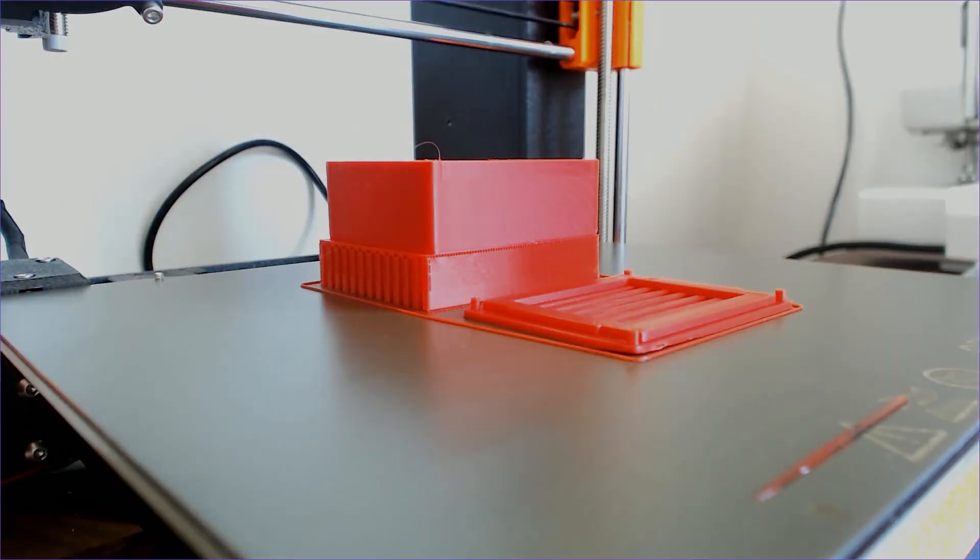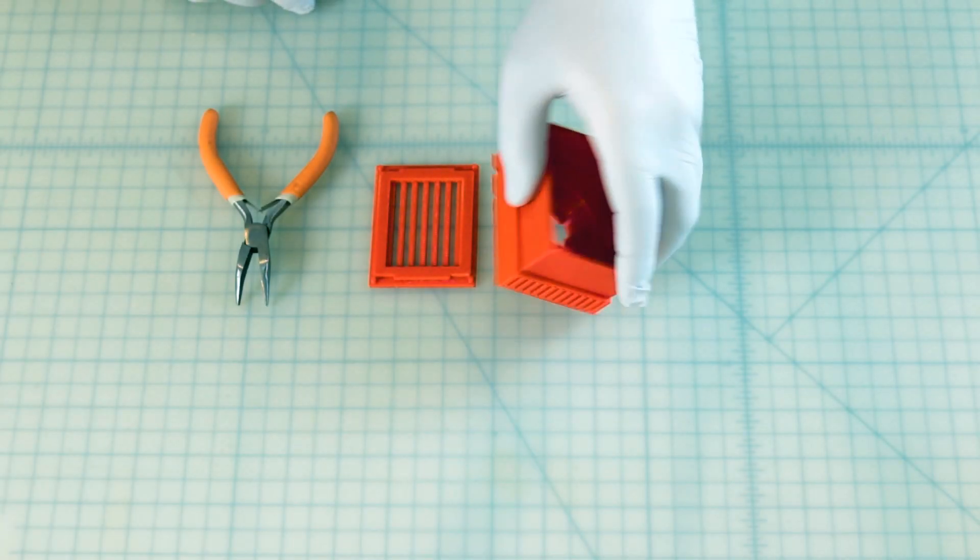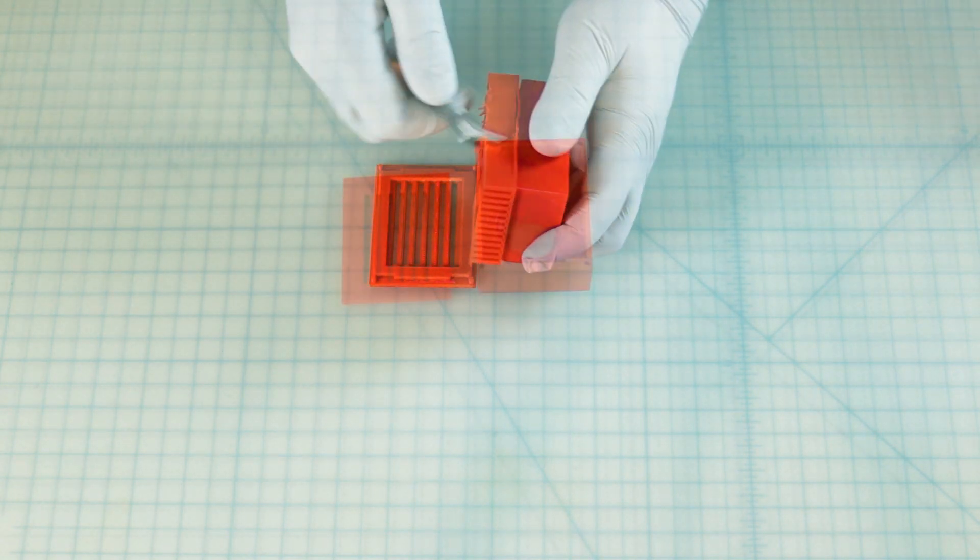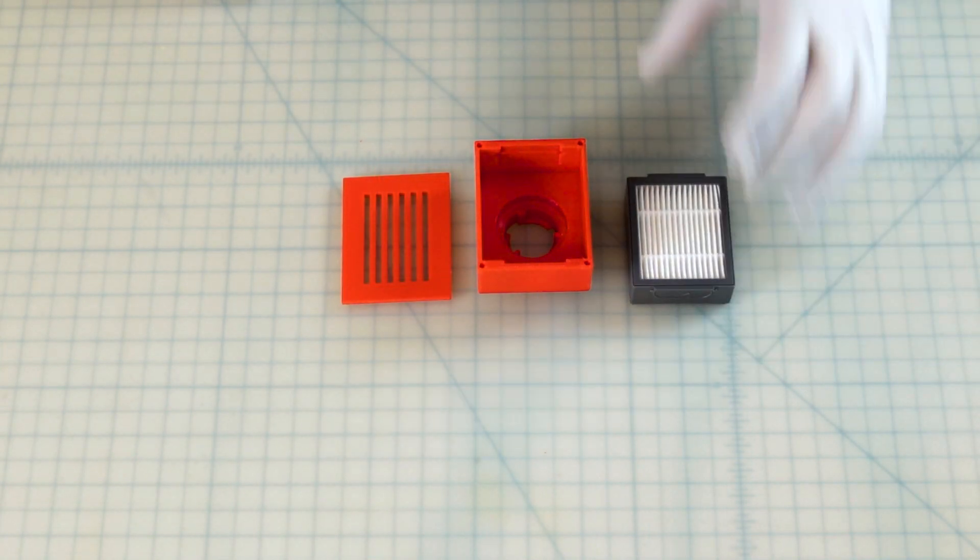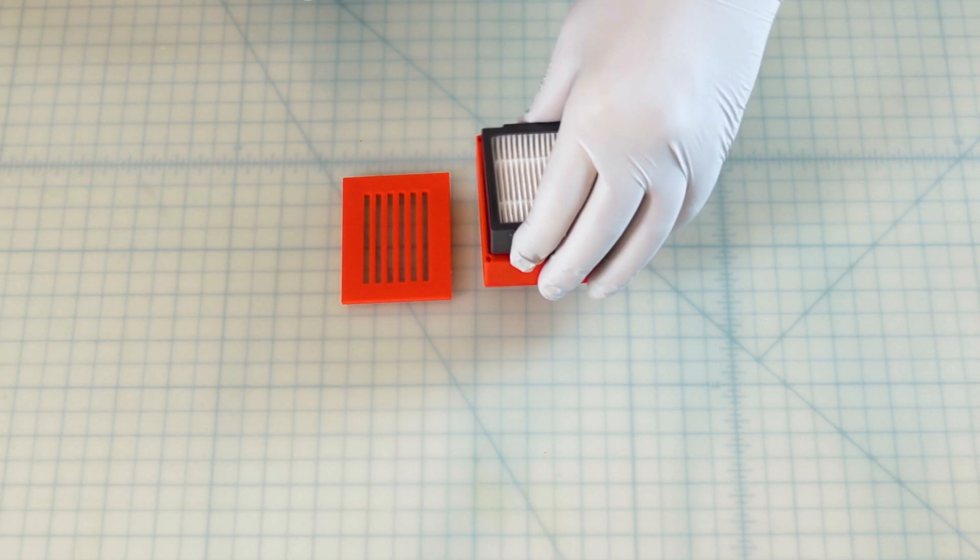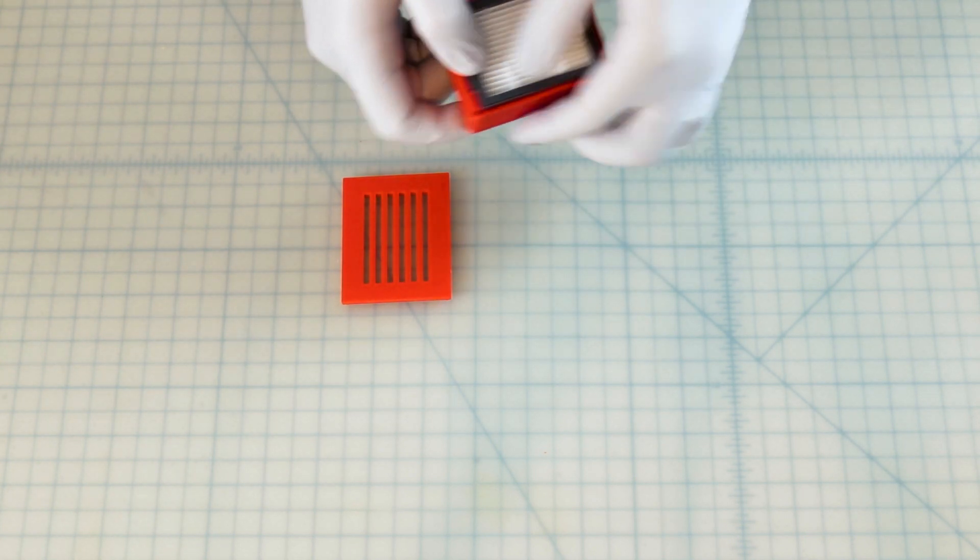Now that we have a completed print, we'll proceed with assembly. First, we'll remove the supports from the print. The cassette is designed to lock the filter tightly in place. The gasket on the rear of the filter will form a tight seal when pushed into place with the cover component.